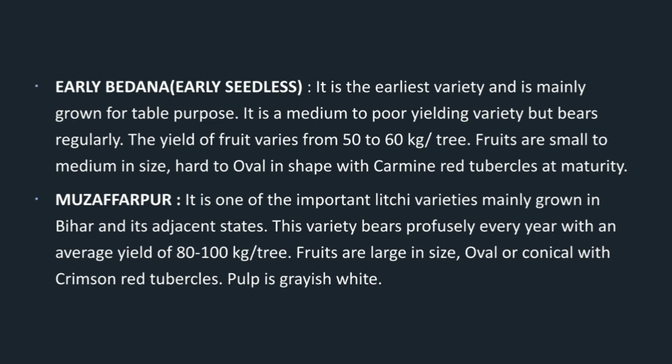Early bedana or early seedless: It is the earliest variety and is mainly grown for table purpose. It is a medium to poor yielding variety but bears regularly. The yield varies from 50 to 60 kg per tree. Fruits are small to medium in size, round to oval in shape with carmine-red tubercles at maturity. Muzaffirpur: It is one of the important lychee varieties mainly grown in Bihar and adjacent states. This variety bears profusely every year with an average yield of 80 to 100 kg per tree. Fruits are large in size, oval or conical with crimson-red tubercles. Pulp is grayish white.